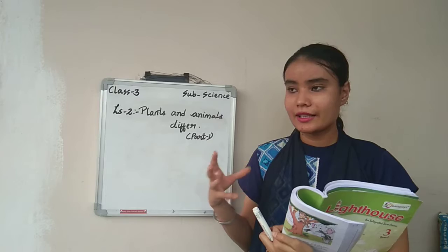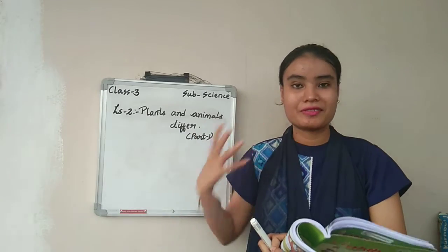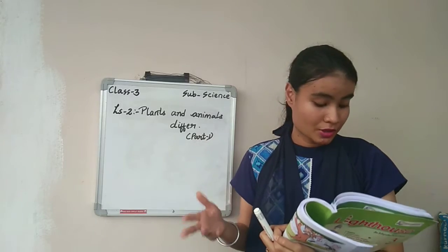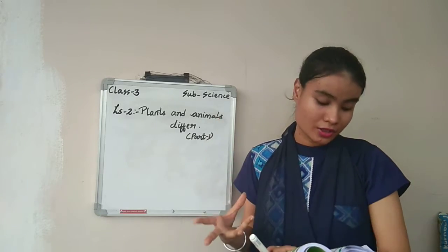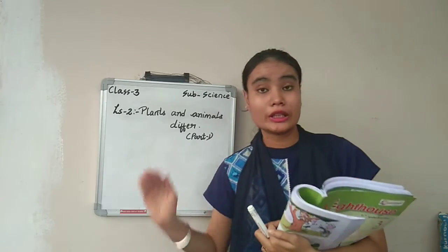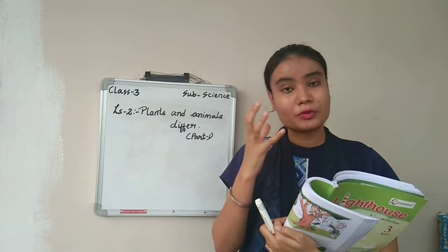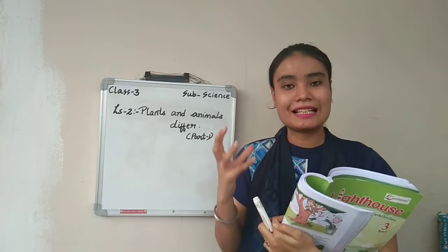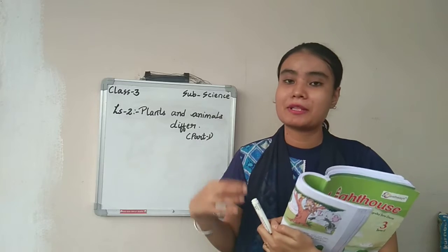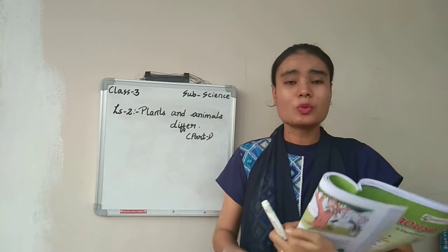Not all animals walk — some animals can fly, some can only swim, some can run, some can walk, and some can crawl. These are the different types of movements we can see in animals. Plants cannot move, but animals can move from one place to another using different kinds of movement.